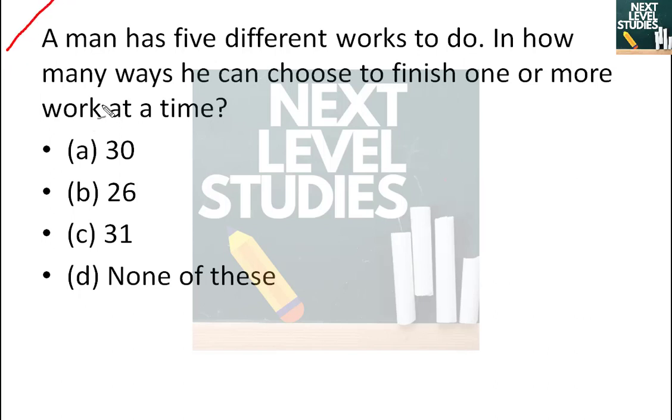Hello students, I will discuss some PNC questions today. The first question is: a man has five different works to do. In how many ways can he choose to finish one or more work at a time? I will tell you a basic concept of how you can approach this question. I will give you the formula and the basic approach as well.